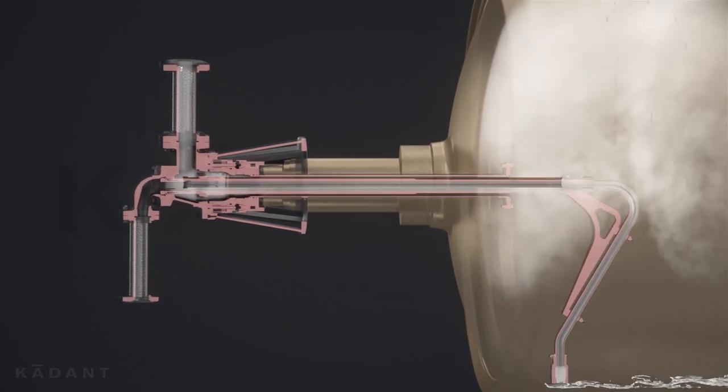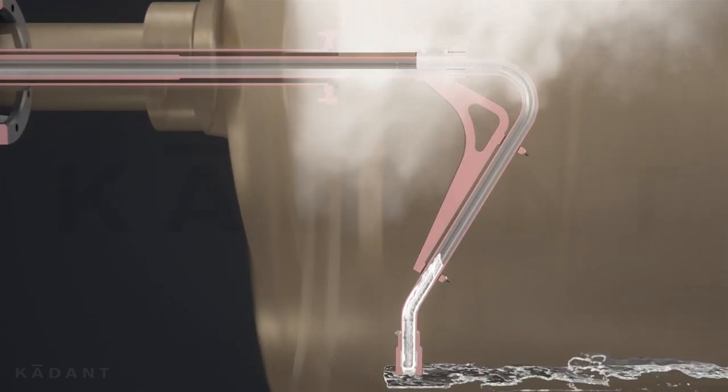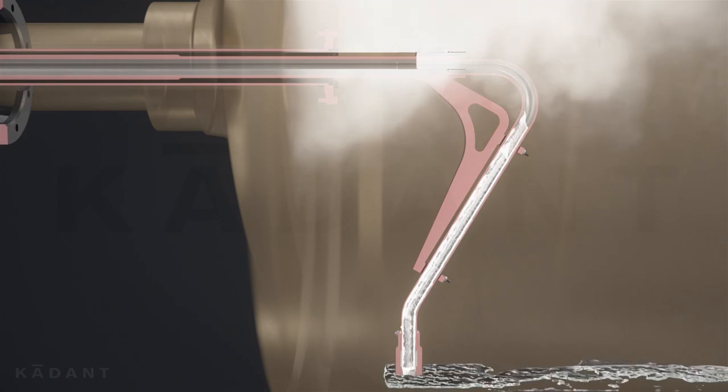Differential pressure and blow-through steam push the condensate into the stationary siphon and back through the rotary joint to the condensate return piping.